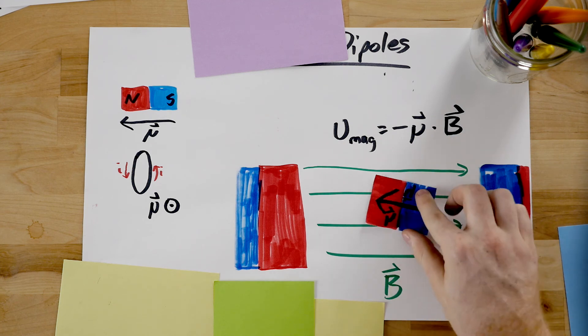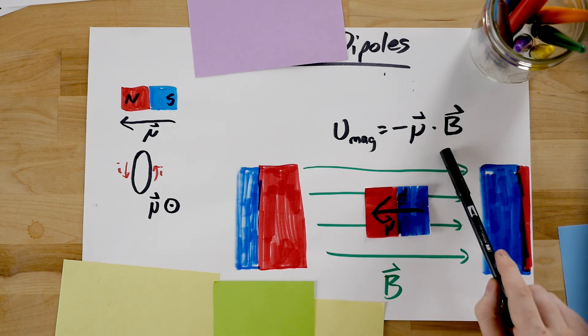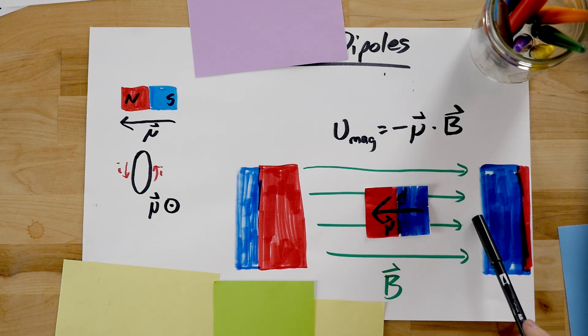If I flip this, I end up with an angle of 180 degrees, and this term becomes positive. That's why we have a stable equilibrium and an unstable equilibrium.